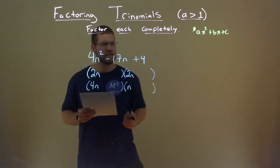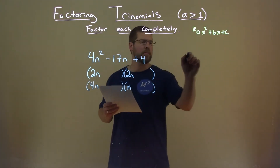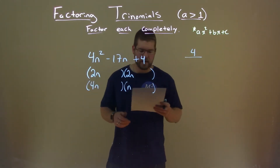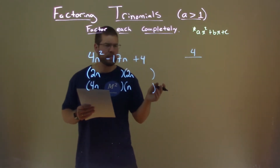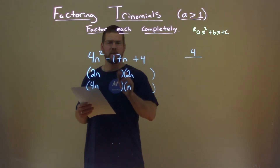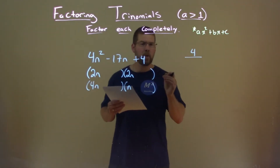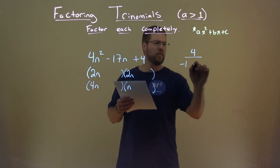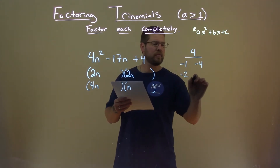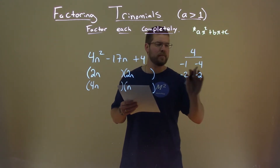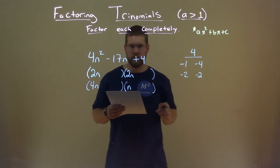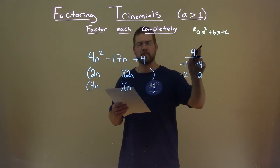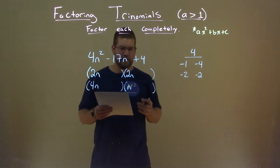Let's look at our c value. Our c value is 4. So we have to find two numbers that multiply to be positive 4. But since our b value is negative, that tells us that both of these numbers will be negative. So that's either negative 1 and negative 4, or negative 2 and negative 2. Both those numbers multiply to equal positive 4, but they're both negative.